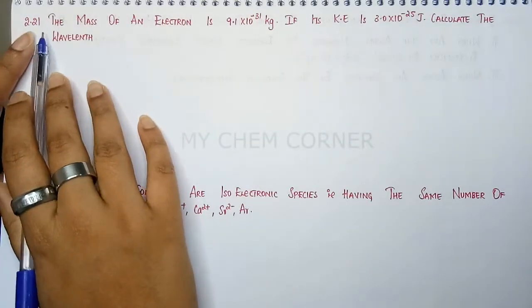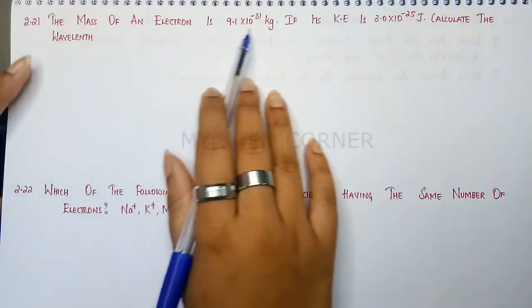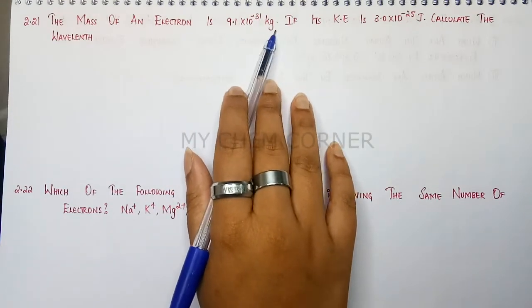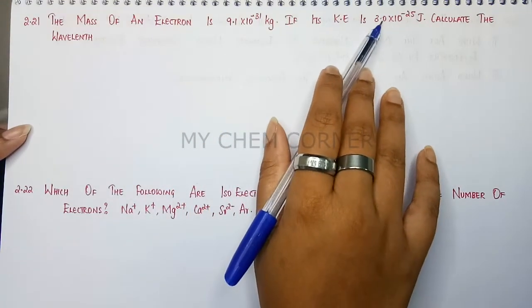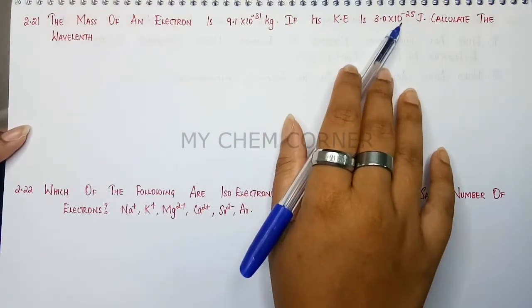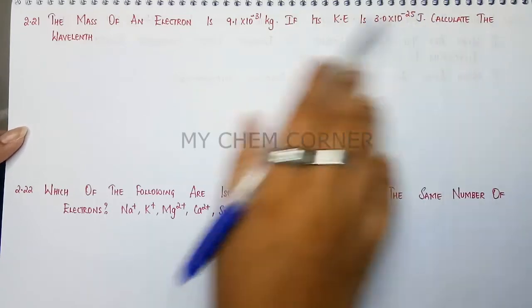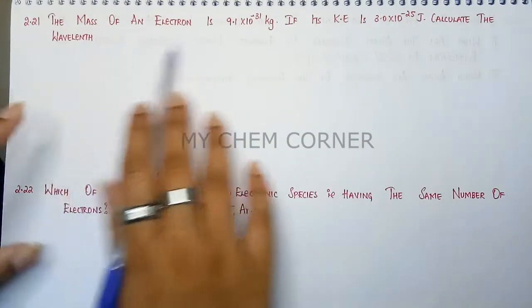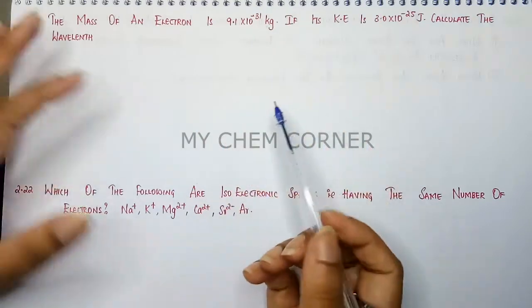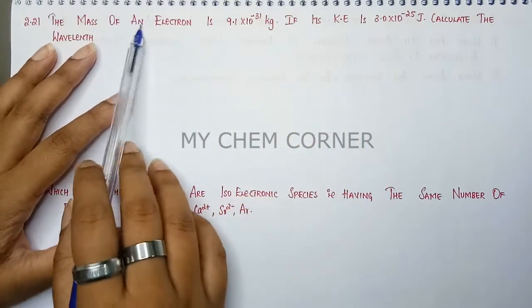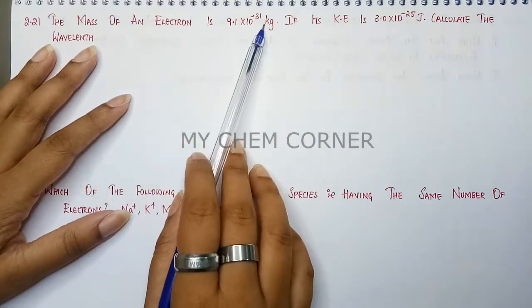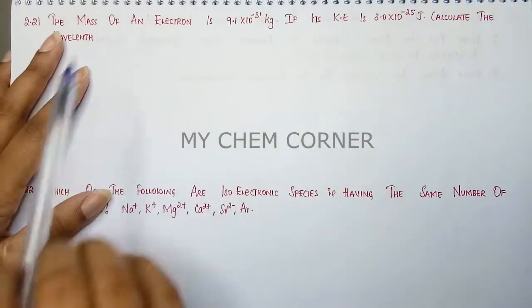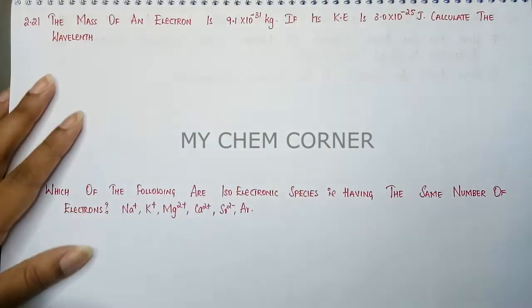Our next question is 2.21. The mass of an electron is 9.1 × 10⁻³¹ kg. If its kinetic energy is 3.0 × 10⁻²⁵ joule, calculate the wavelength. It's an easy question. Mass of an electron is given, kinetic energy is also given, and we need to calculate the wavelength.